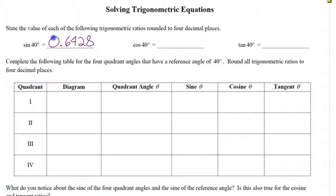What is the cosine of 40 degrees? Just make sure your calculator is in degrees. Go sine, 40, enter. The answer is 0.7660.